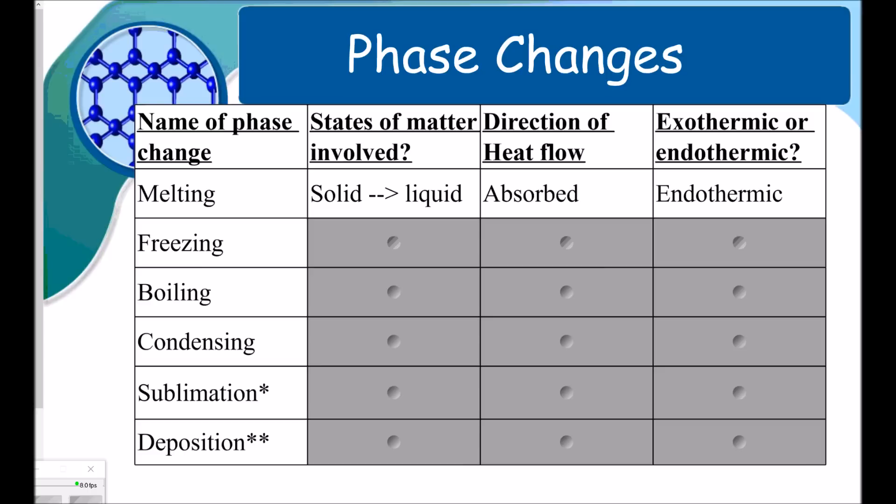Melting: the states of matter involved are going from a solid to a liquid. This is heat being absorbed, and we call this endothermic. Take a minute and pause the video — I want to see if you can tell me the states of matter involved in freezing, boiling, and condensing.